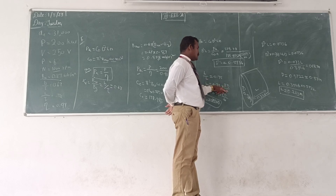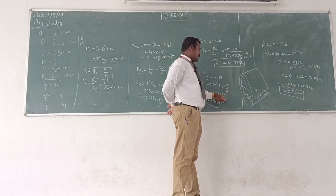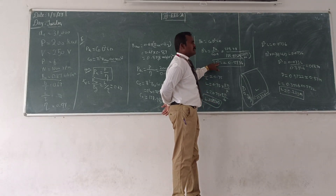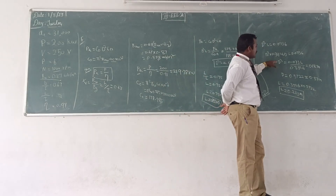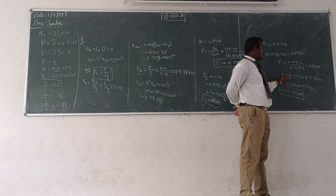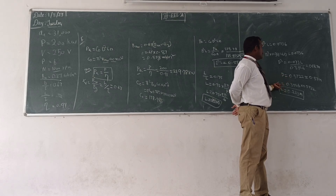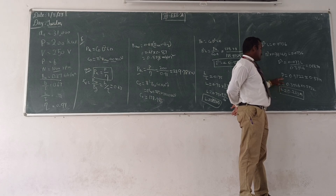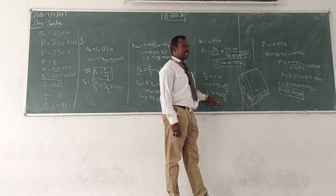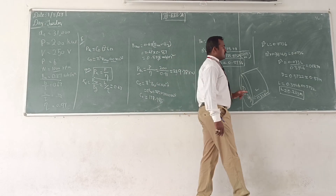The pole pitch τ = πD/P. So L should be equal to 0.75 × πD divided by 6, since the number of poles is 6. Then L in terms of D is obtained. You substitute this into the D²L equation, which gives D³. Then taking the cube root, you can find the diameter of the machine. The D value is then substituted back into the expression for L in terms of D to find the L value.